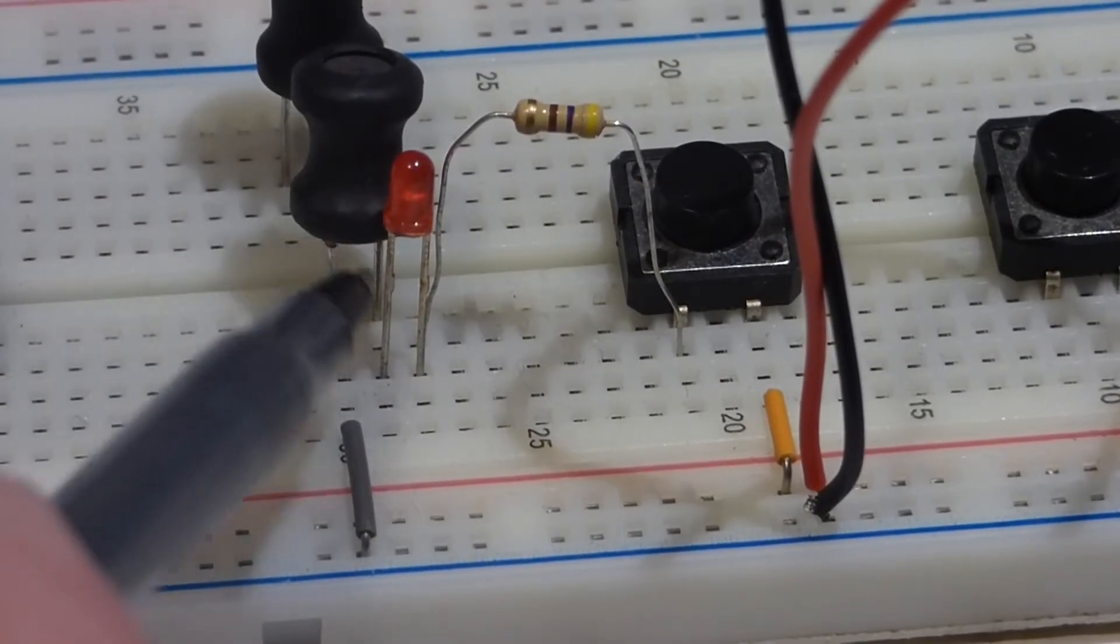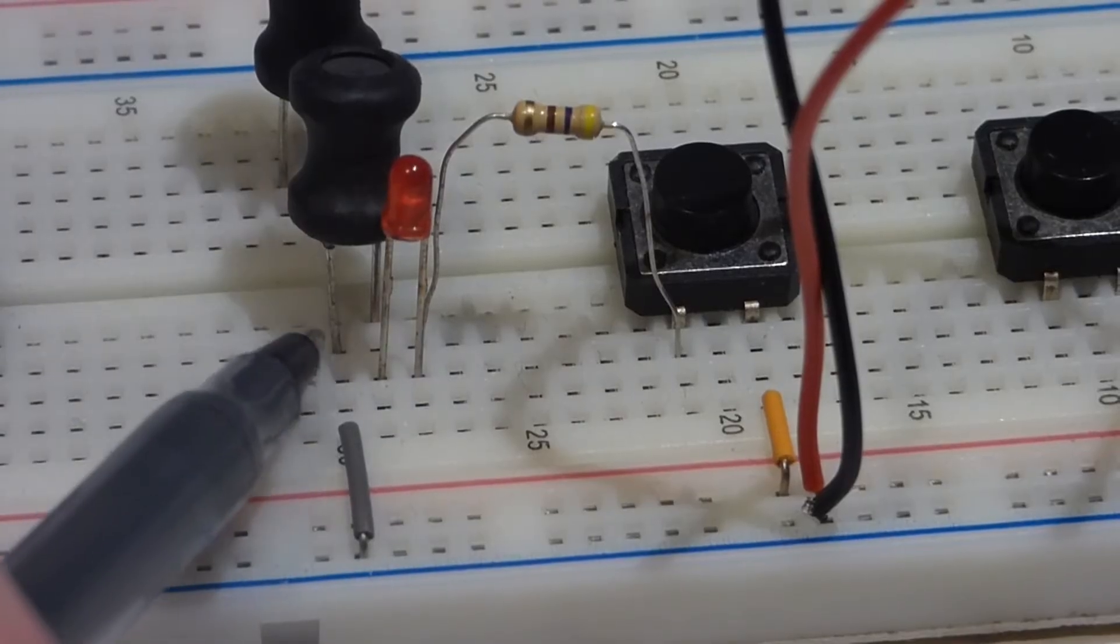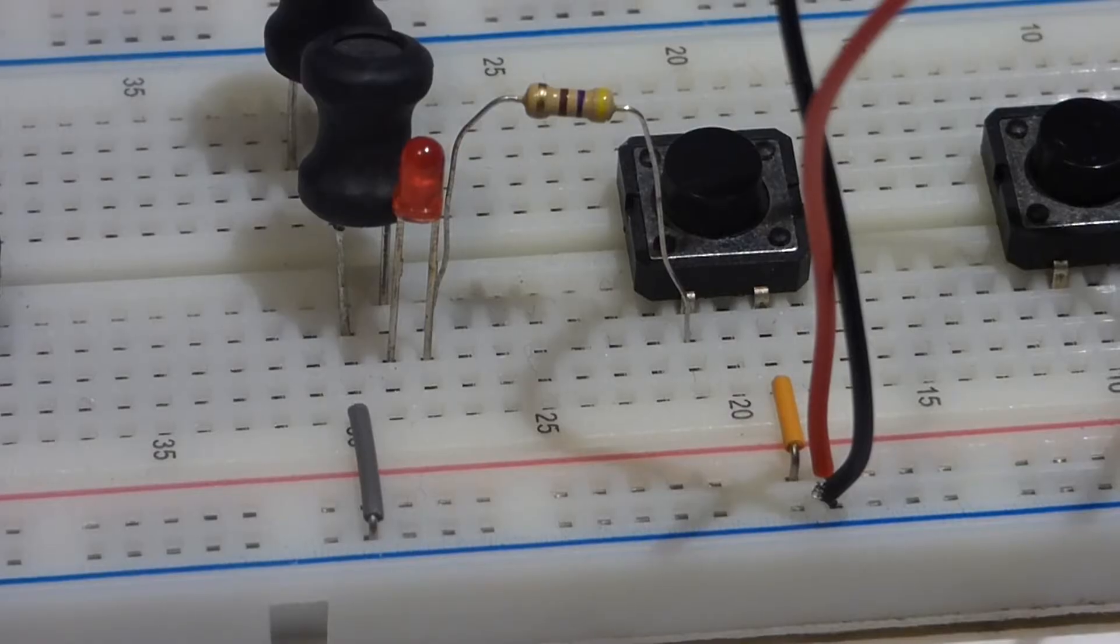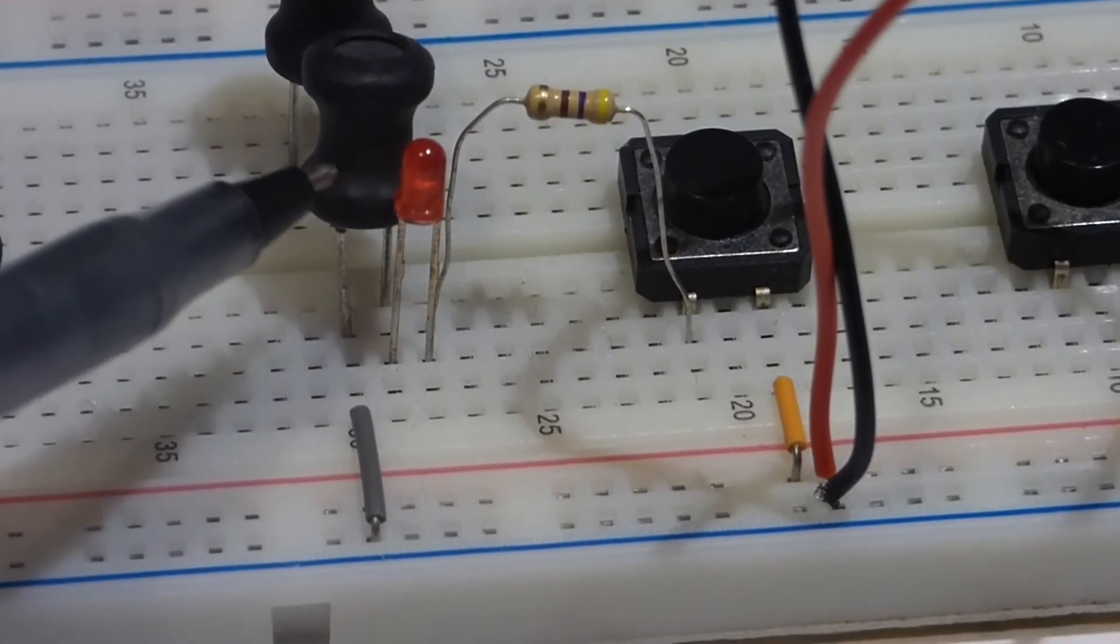The current will go through the LED and then towards one end of the inductor, it'll go through the inductor and then back to ground. The inductor won't make a big impact on this circuit. We won't even notice it.